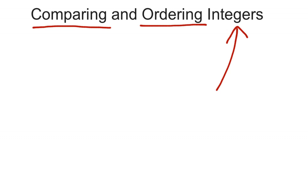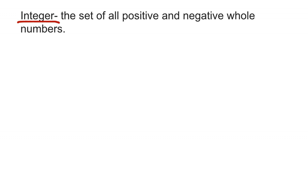The big theme today is learning what integers are - one of the big themes of our seventh grade year. Integers are really when we start to include not only positive numbers but also negative numbers. Here's the definition: integers are the set of all positive and negative whole numbers - the set of all positive and negative whole numbers.